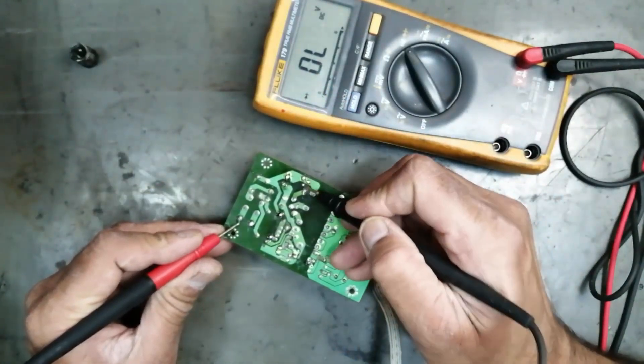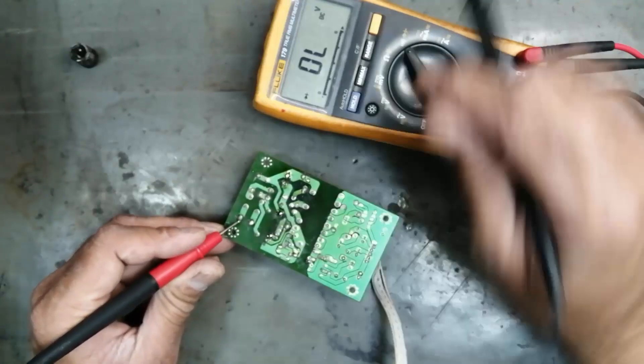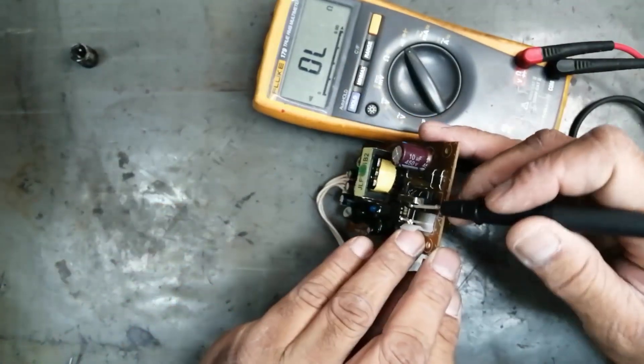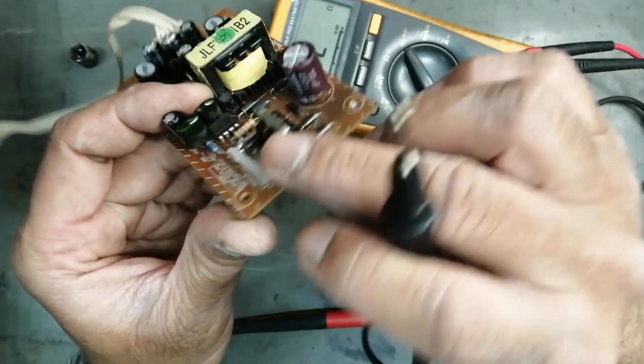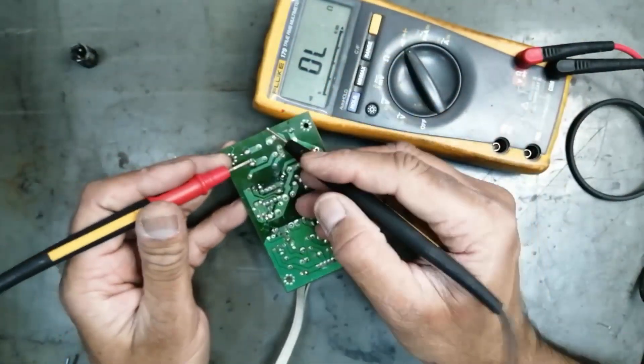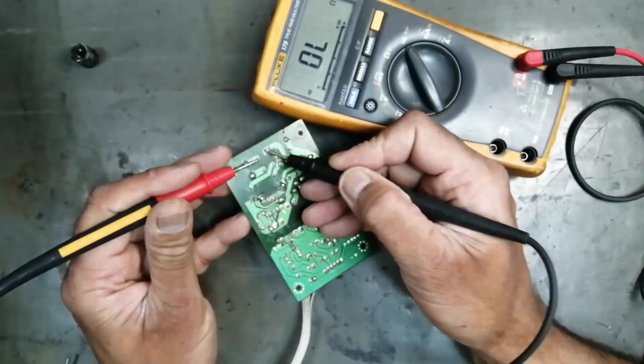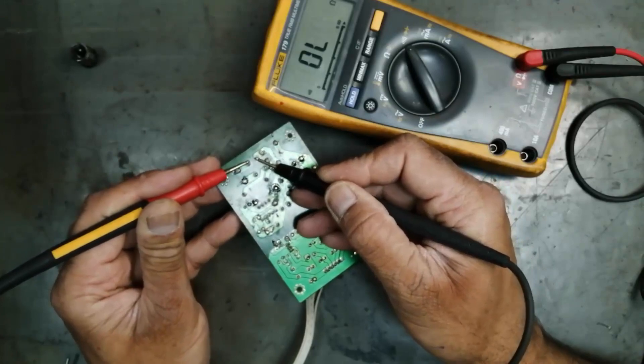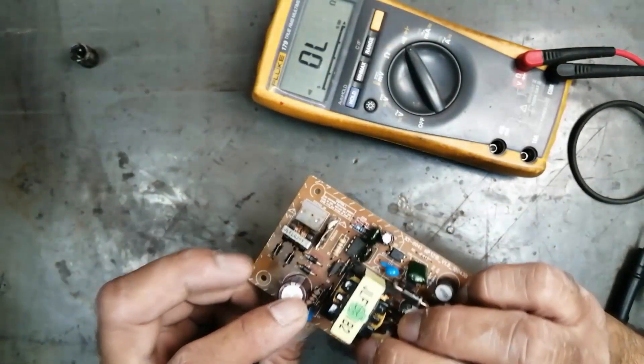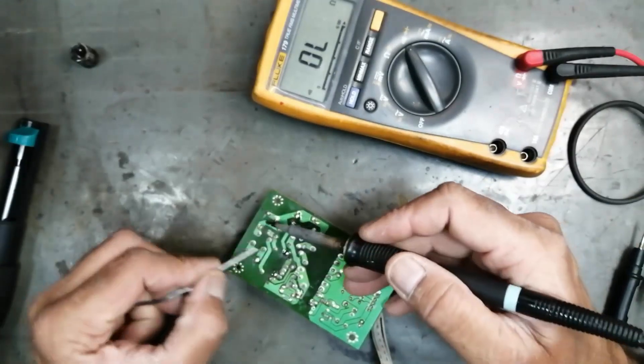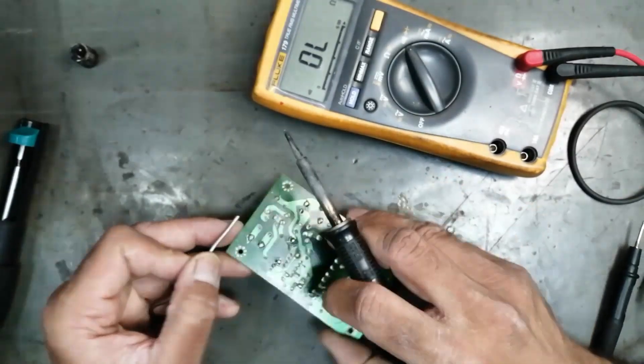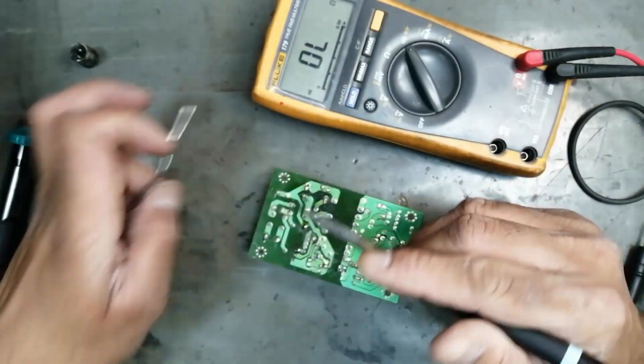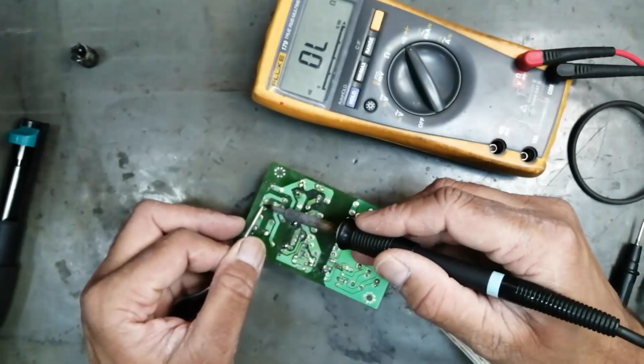Now we have a problem - we cannot find anything here, so we have to test continuity from here. If we see, here is a filter choke. Let's start. Oh, it has no reading. It has no reading, so the filter is dead due to high current. Maybe we will find some other short circuits because this inductor is now open. If it is open, that means we have some other issues as well.